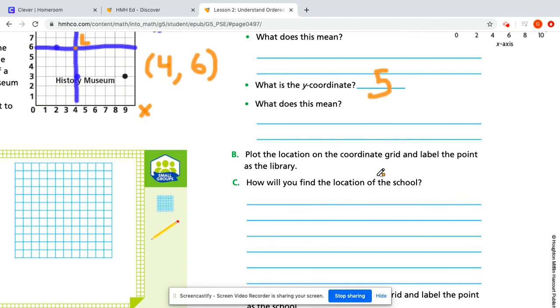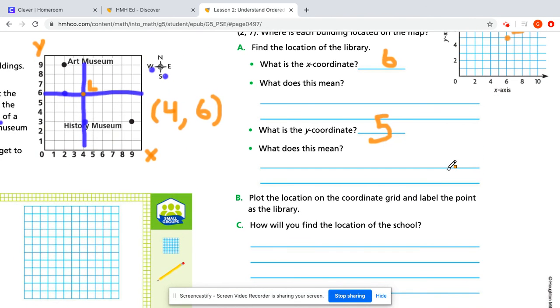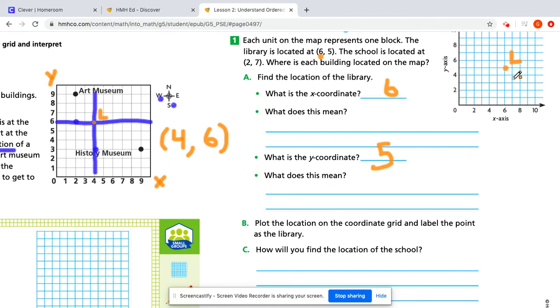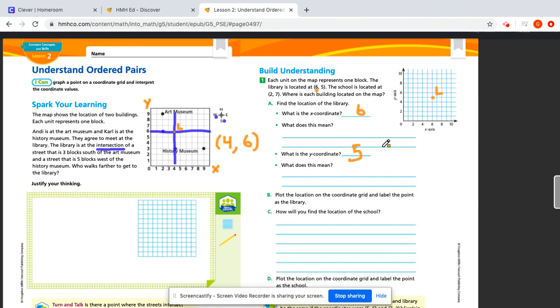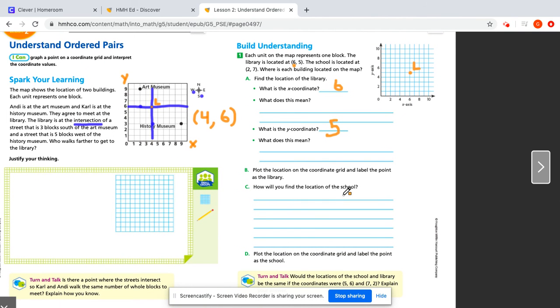Then it says plot the location on the grid and label that point as library. So I just did. I wrote L, but you can write out the word library if that helps you.